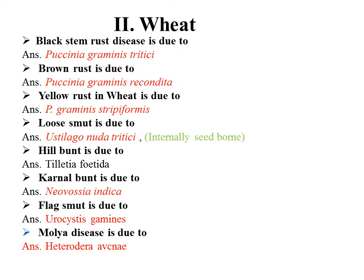Hill bunt of wheat is caused by Tilletia foetida. Karnal bunt is caused by Neovossia indica. False smut is caused by Neovossia graminis tritici. These are the major smut diseases of wheat.